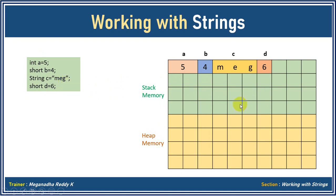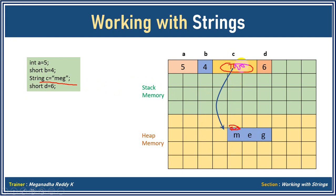Now let's understand how this will be stored. When I declare string c = "meg", that "meg" will not be stored in the stack. The c variable will not hold "meg" directly. Somewhere else in heap memory "meg" will be stored, and the address — let's assume the address is 1000 — will be stored in the variable c. So strings: the actual data is stored in heap memory and the address of that is stored in the variable. That's how reference types are stored.